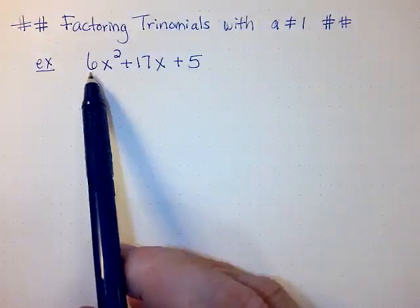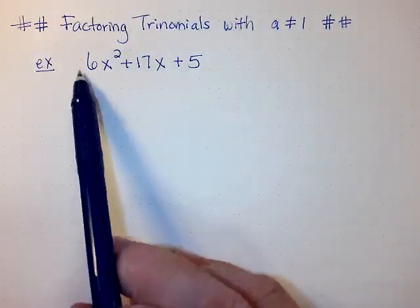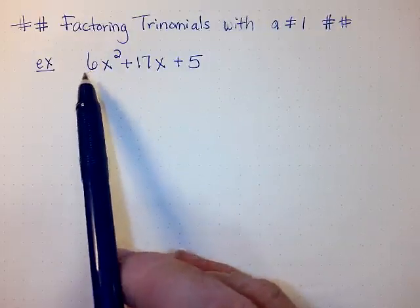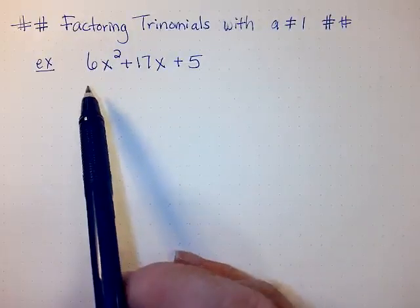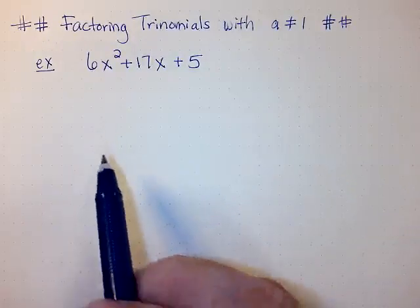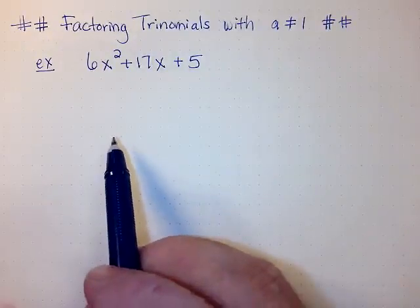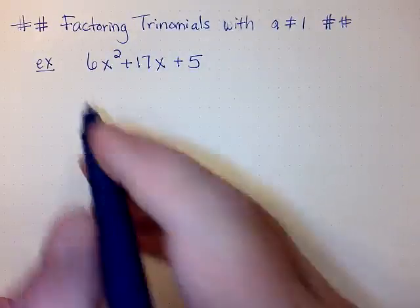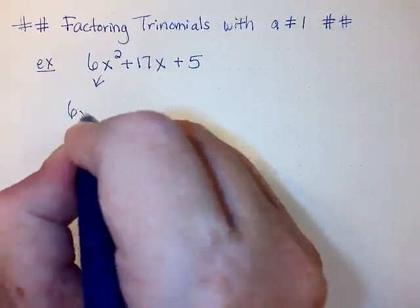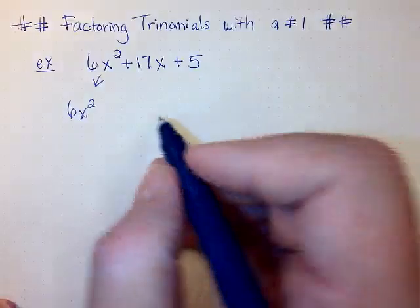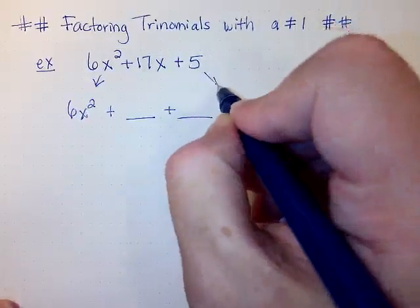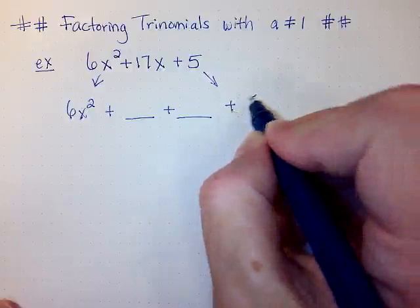In this trinomial, notice that this is a 6, so it's not a 1. This is going to be looked at differently than if it was a 1. Our first step is to factor by grouping. In order to do that, I will bring down the first term, which is 6x squared, then I'm going to add two blanks, and I will bring down the last term, which is plus 5.